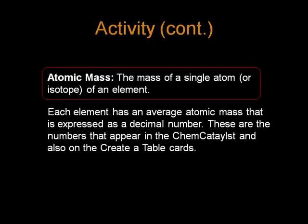Atomic mass is defined as the mass of a single atom or isotope of an element. Each element has an average atomic mass that is expressed as a decimal number. These are numbers that appear in the ChemCatalyst and also on the Create a Table cards.